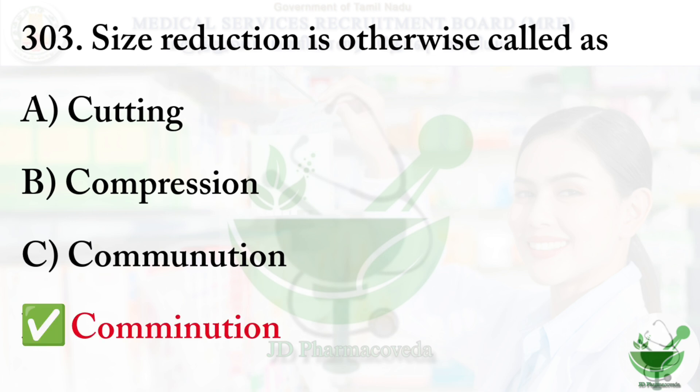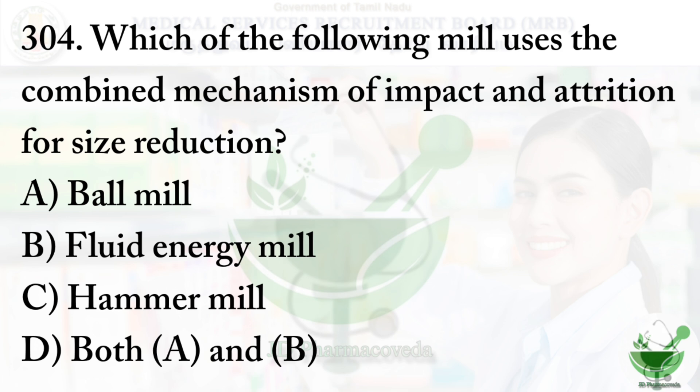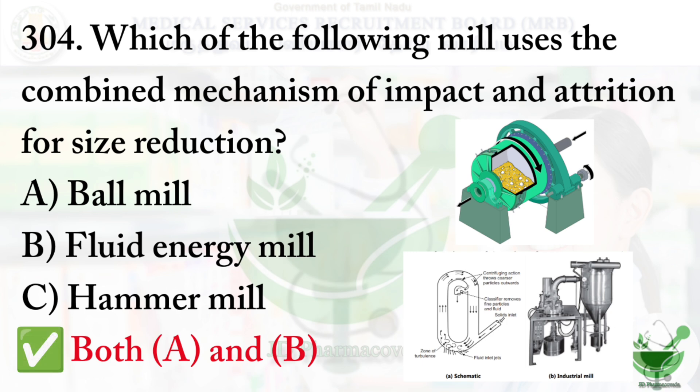Question number 304: Which of the following mills uses the combined mechanism of impact and attrition for size reduction? Option A: ball mill, Option B: fluid energy mill, Option C: hammer mill, Option D: both A and B. The correct answer is Option D, both A and B — ball mill and fluid energy mill.